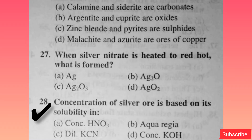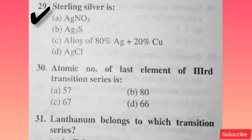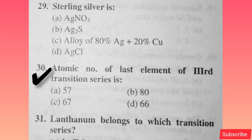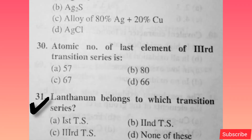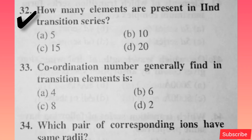Concentration of silver ore is based on its solubility in dilute cyanide — option C is correct. Sterling silver is — option C is correct. Atomic number of the last element of the third transition series is 80 — option B is right. Lanthanum belongs to which transition series? Option C is correct. How many elements are present in the second transition series? Option B is right.